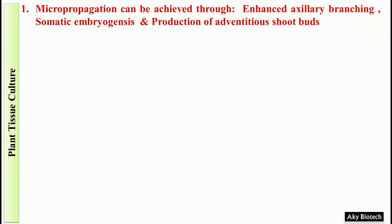Today we'll discuss another important topic — plant tissue culture — which covers many questions in the ICAR NET examination. Question 1: Micropropagation can be achieved through: enhanced axillary branching, somatic embryogenesis, and production of adventitious shoot buds.